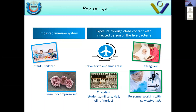Risk groups can be divided into two categories: those who are inherently immunocompromised, especially with complement deficiency or asplenia, or those who have high exposure to Neisseria meningitidis — such as travelers to endemic areas, crowded settings like Hajj and military places, student dormitories, and healthcare workers including physicians and pharmacists.